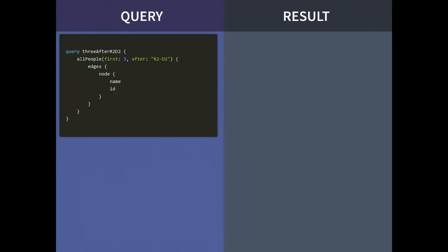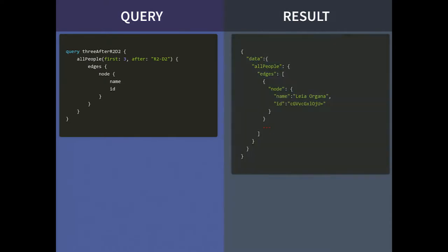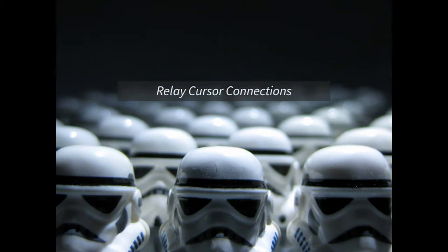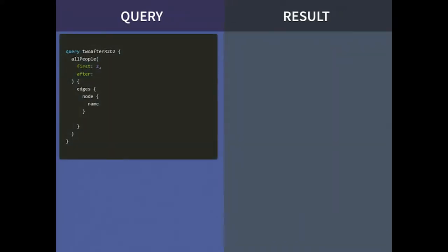So how does this look in a query? We have 'first: 3, after: R2D2'. You'll notice two reserved words: 'edges' and 'node'. This is saying you have multiple items inside this pagination. The node itself is a person — an object of type person — and you can get name, ID, hair color, height, everything we got from Luke before. But you can't simply say 'everything after R2D2' by name — your connection doesn't know that. So how do we do that in GraphQL? We use relay cursor connections.